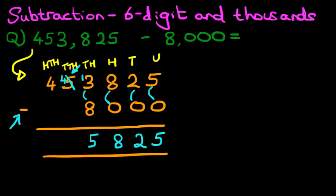We now move on to the ten thousands column, where we've got 4 minus 0 is 4. The hundred thousands, we've got, again, the same, 4 minus 0 is 4.